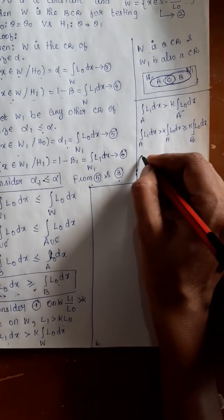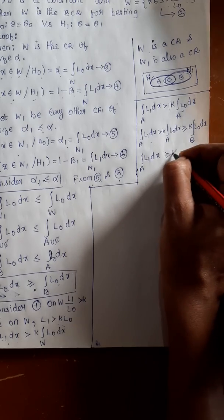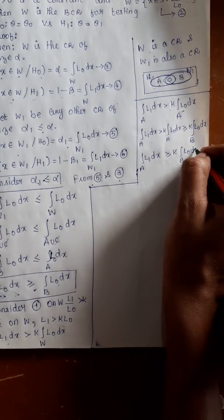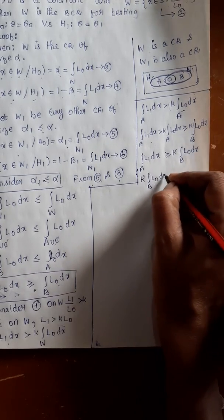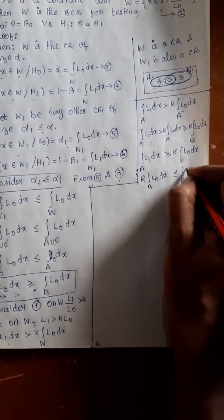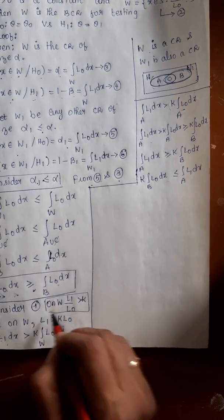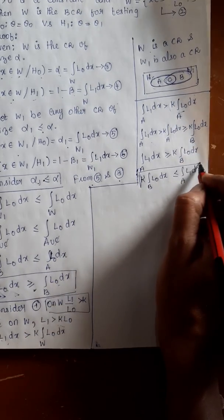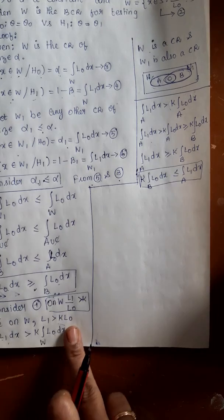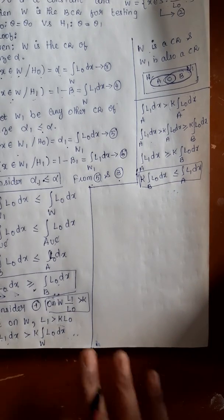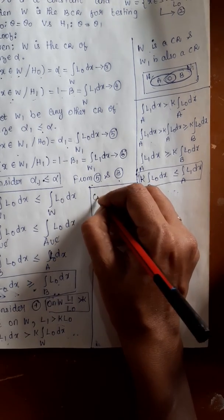Taking the first and last terms: integral over a of l1 dx is greater than or equal to k times integral over b of l0 dx. Reversing: k times integral over b of l0 dx is less than or equal to integral over a of l1 dx. Second consideration complete — and remember to reverse the inequality for the proof to flow smoothly.